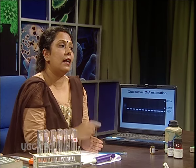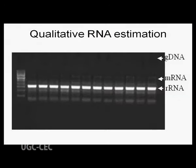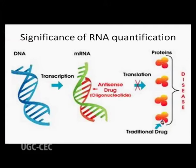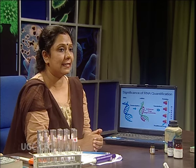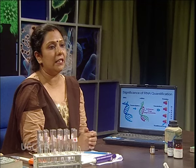RNA estimation may be either qualitative or quantitative. Like DNA, RNA can be observed by agarose gel electrophoresis, but the position of the RNA band differs from the DNA band. Quantitatively, RNA can be measured by UV spectrometric as well as colorimetric methods. The significance of RNA quantification: quantified RNA is used against certain diseases. Proteins responsible for a disease are synthesized from sense mRNA, and antisense RNA applied from outside binds with the sense mRNA, inhibiting the protein responsible for the disease condition. That is why quantification of RNA is needed.